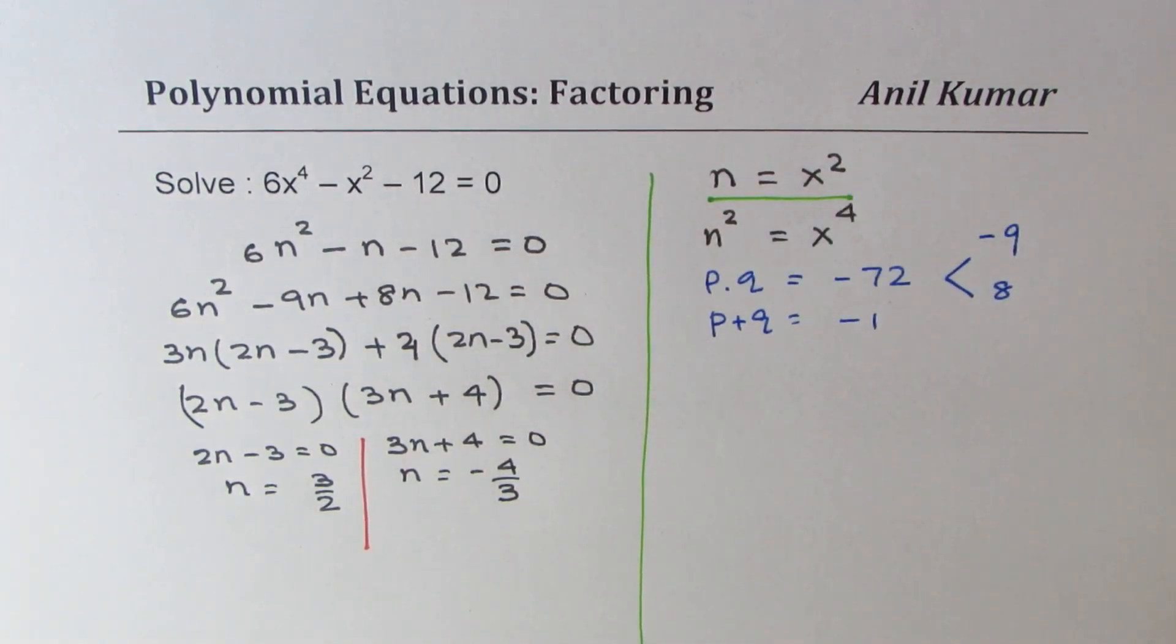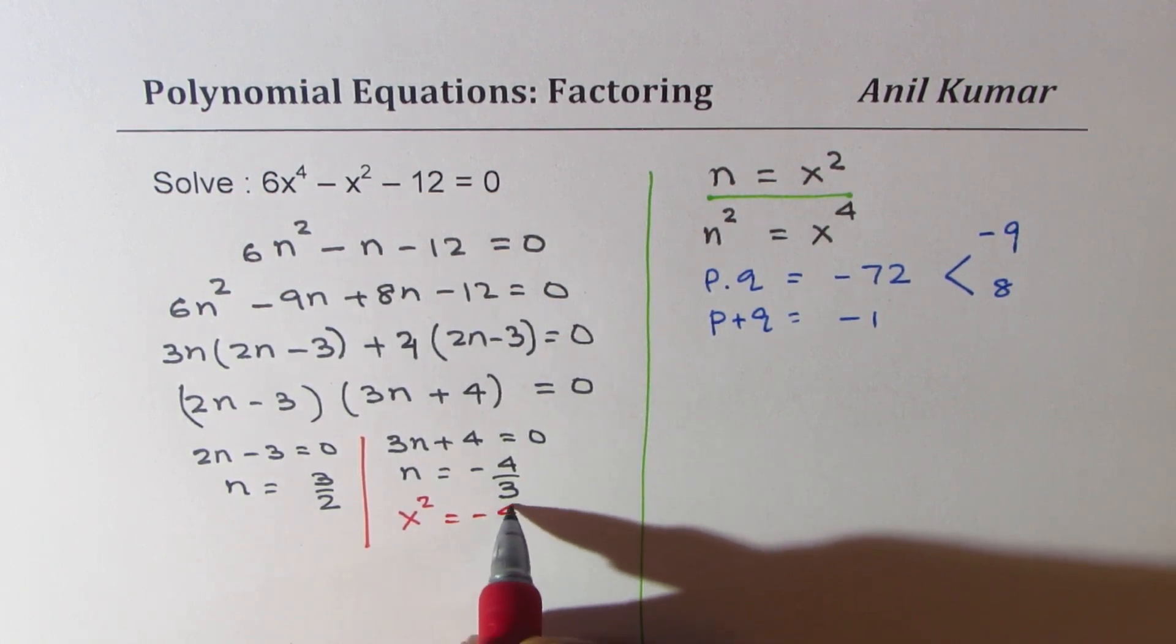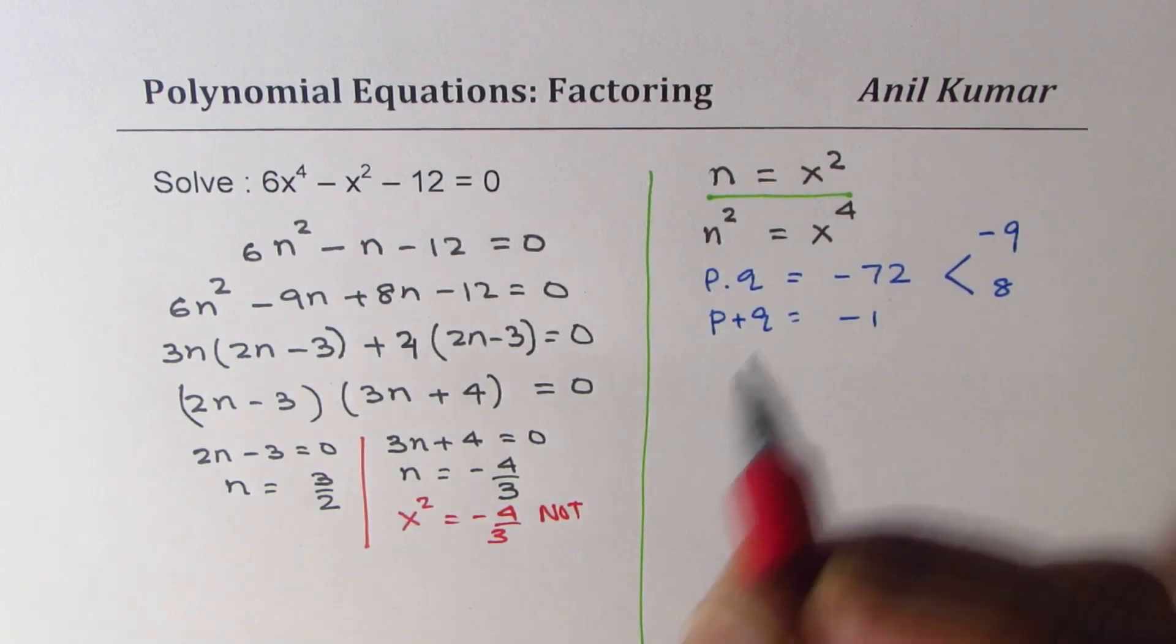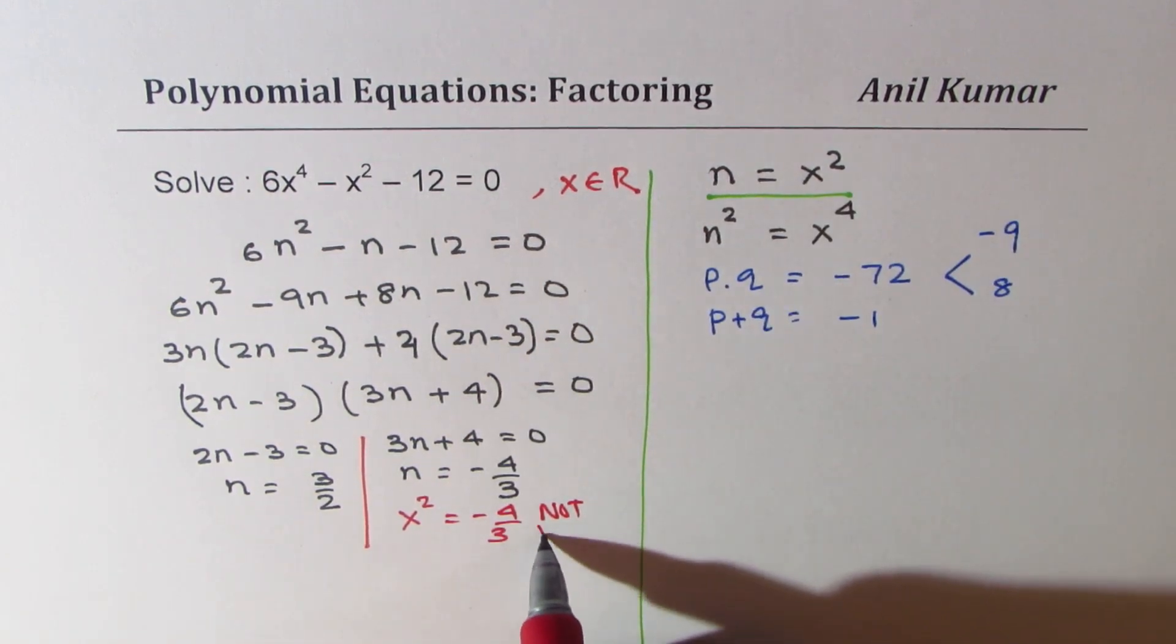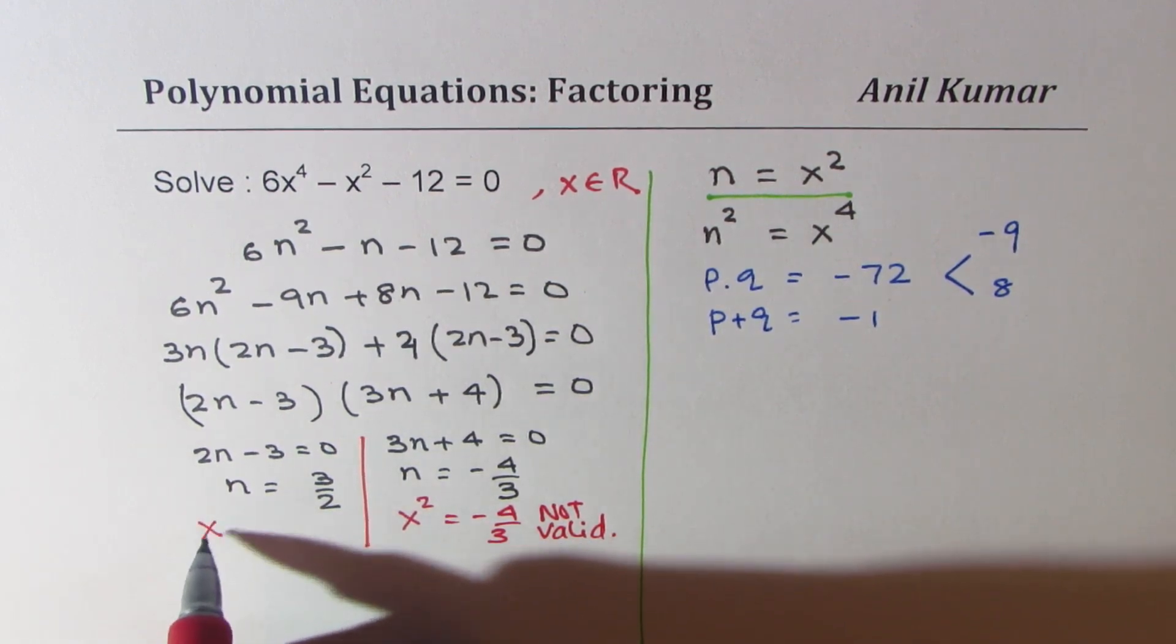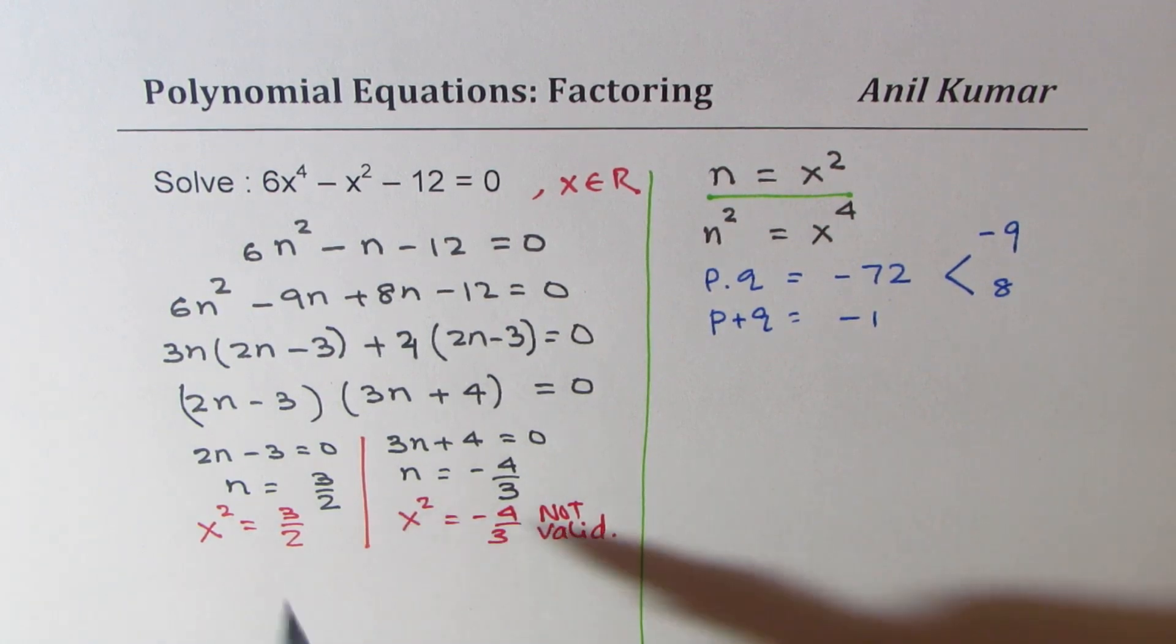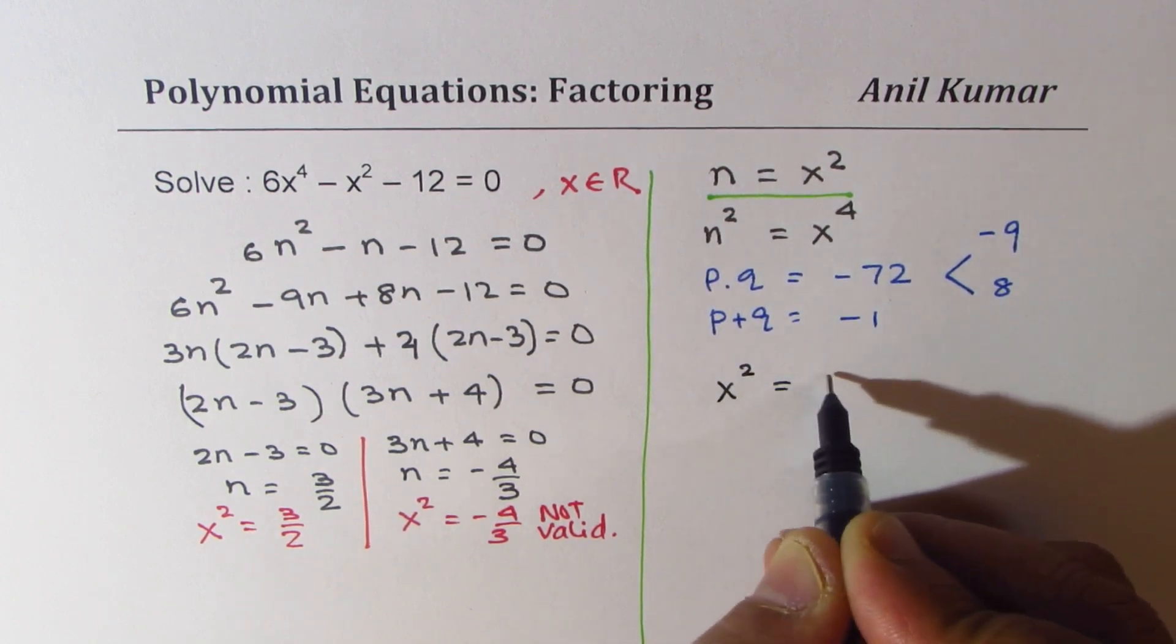Now remember the substitution which we have made? We have written n as x square. Now clearly, x square equals to minus 4 over 3 is not valid. Square is always positive. We are talking about x belonging to real numbers. So this is a valid answer. We could write here x square equals to 3 over 2. So we do have one valid answer, which is x square equals to 3 over 2.